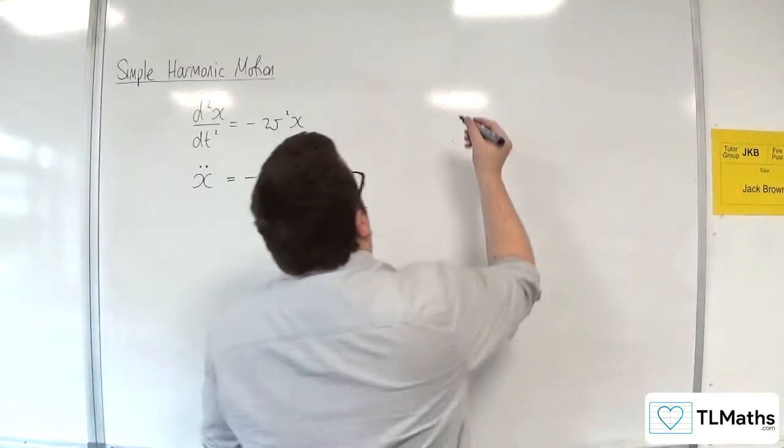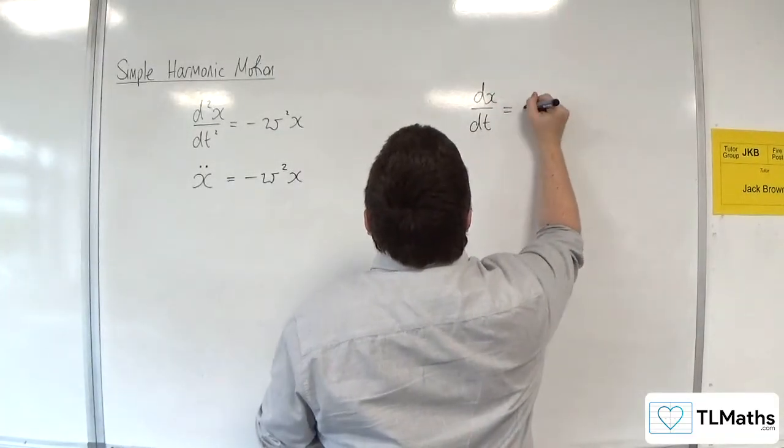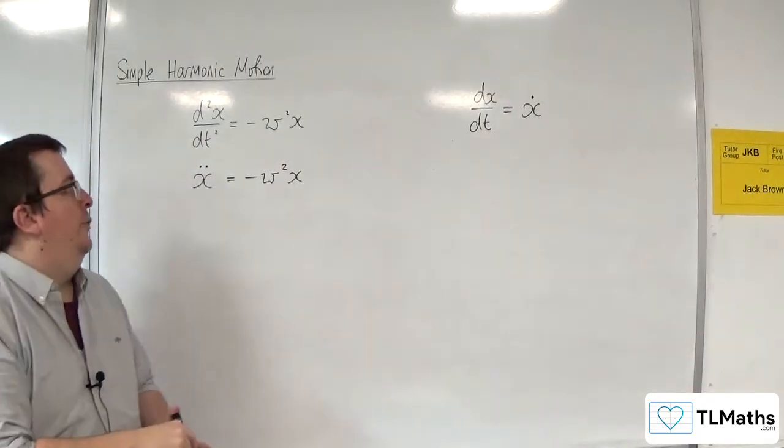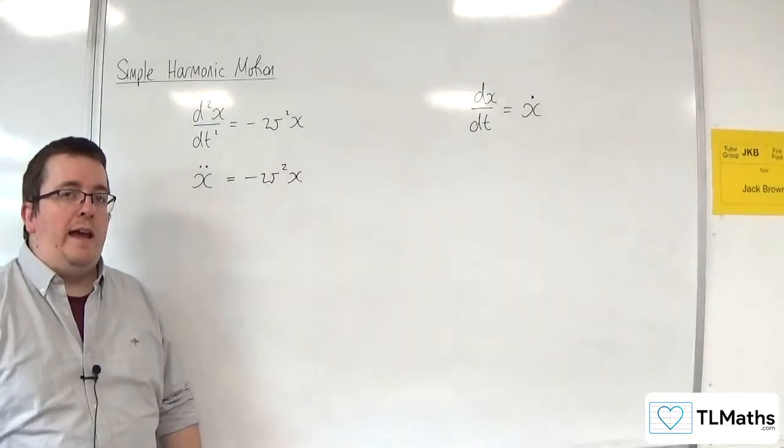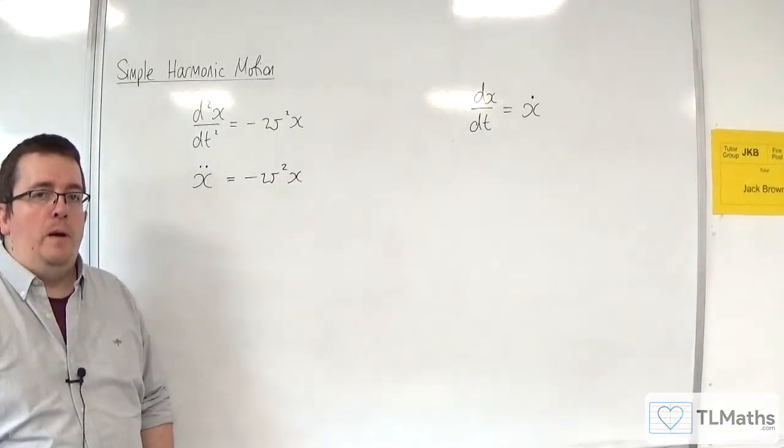So, in other words, if you had dx by dt, we would use x dot. So this is an alternative way of writing the equation down that you should be aware of should it come up.